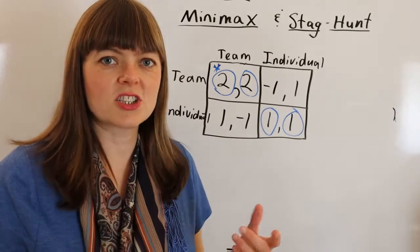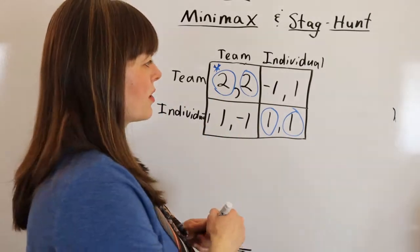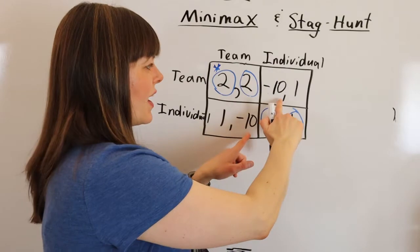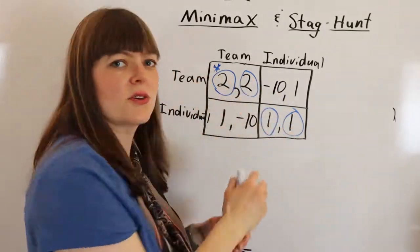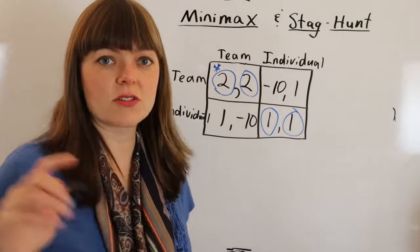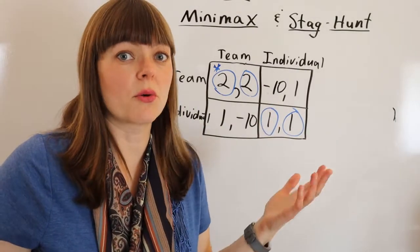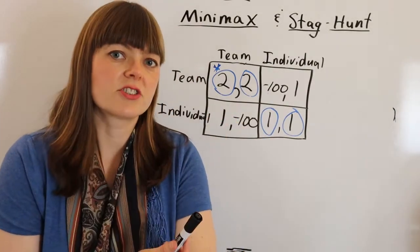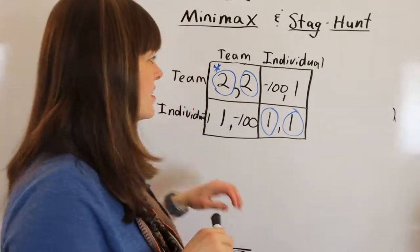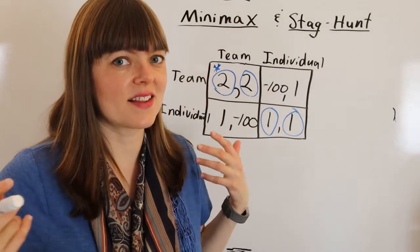As a matter of fact, we can change this to negative 10, and it still will not change the equilibrium. In fact, we can put any negative number here, and it's not going to change the fact that these are the two Nash equilibriums at all. So let me put a really low number in here. Nash equilibrium has not changed.